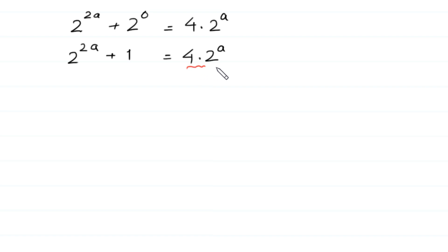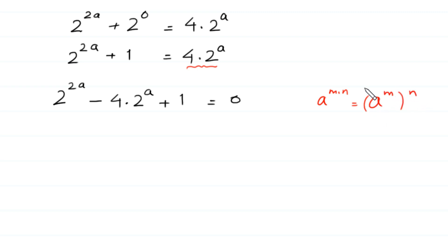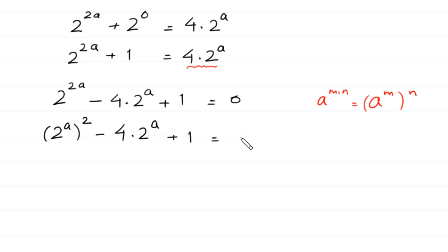We move 4 times 2 to the power a to the left side, giving us 2 to the power 2a minus 4 times 2 to the power a plus 1 equals 0. Using the exponent property a to the power m times n equals (a^m)^n, we write 2 to the power 2a as (2 to the power a) squared, giving: (2^a)² minus 4 times 2^a plus 1 equals 0.